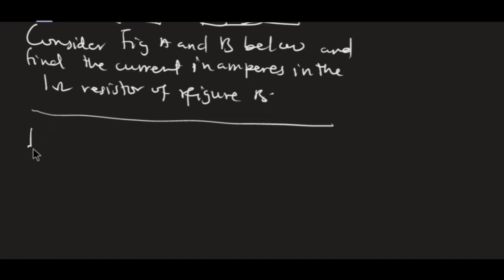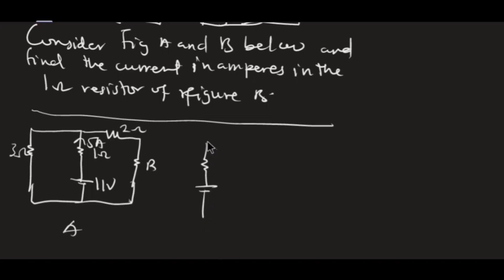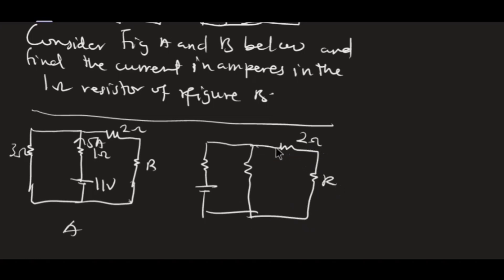Find the current in the 1-ohm resistor of figure B. Let me draw the two figures. Figure A has a 3-ohm resistor, a 1-ohm resistor, a source of 11 volts, with 5 amperes coming out, a 2-ohm resistor, and a 3-ohm resistor. Figure B has 1-ohm, 1-ohm, 1-ohm resistors, a 20-volt source, and a 3-ohm resistor.